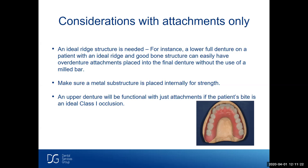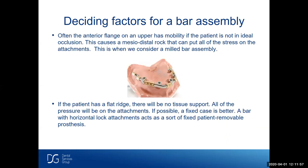Considerations with attachments only: an ideal ridge structure is needed. A lower full denture on a patient with an ideal ridge and good bone structure can easily have overdenture attachments placed into the final denture without the use of a mill bar. We want to make sure a metal substructure is placed internally for strength. An upper denture would be functional with just attachments if the patient's bite is in ideal Class 1 occlusion. Often the anterior flanges on an upper have mobility if the patient is not in ideal occlusion, causing mesiodistal rock — this is when we consider a mill bar assembly.